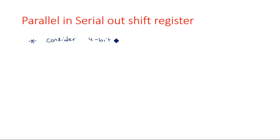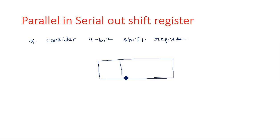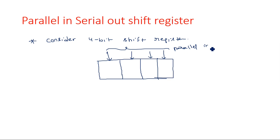Consider a 4-bit shift register. Four bits of information will be stored across four flip-flop locations. Data is entering parallelly — here, here, here, and here — so all the flip-flops are directly taking the input. This is the loading operation, the parallel input. Serial output may be from the left-hand side or right-hand side depending on the direction of movement, with data coming out serially one after another.